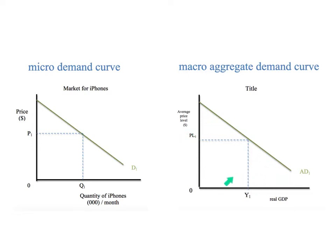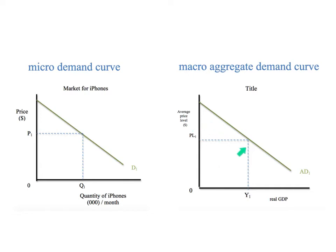The two different diagrams look very similar, but this one has aggregate demand, average price level, and real GDP on the axes. This could also be expressed as output or national income. We use PL1 on the vertical axis and Y1 on the horizontal axis, with Y representing national income. The aggregate demand curve illustrates the inverse relationship between the average price level and the total real output demanded.